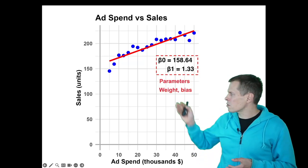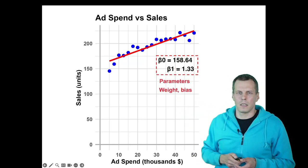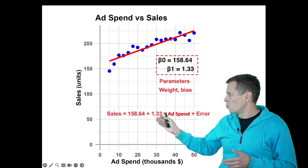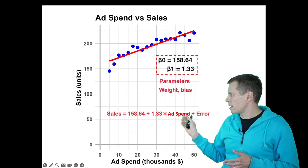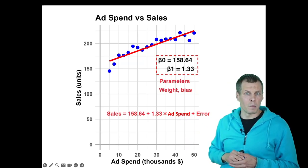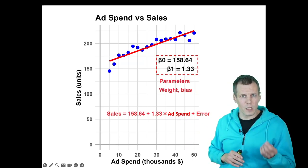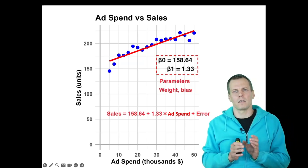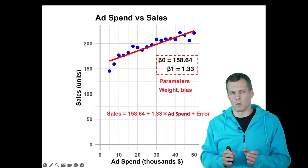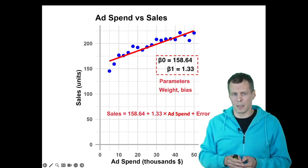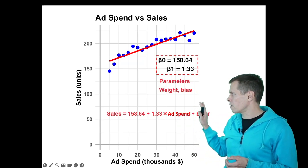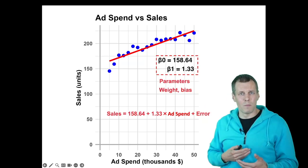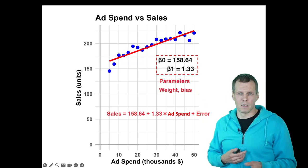How the regression line here is calculated is that we take the bias, 158, we add weight times ad spending. And then if we want to generate observations from this model, we add some error. So the idea of error is that there's some variation in the actual values around the predicted line. This equation without error gives you the regression line.